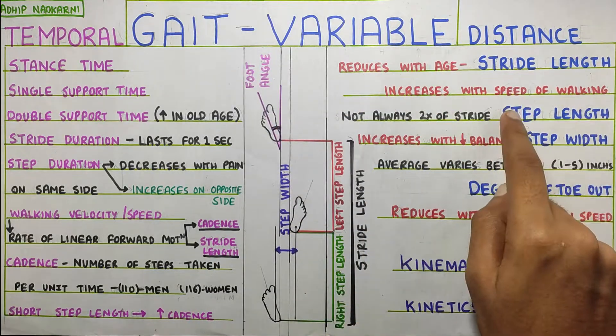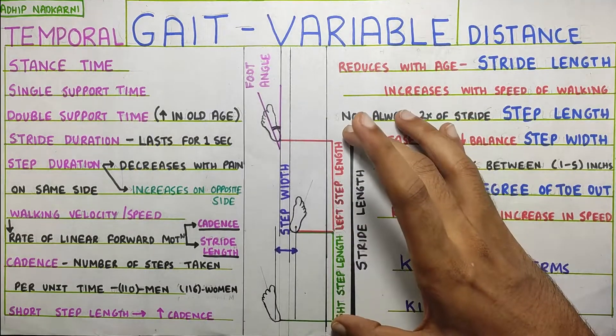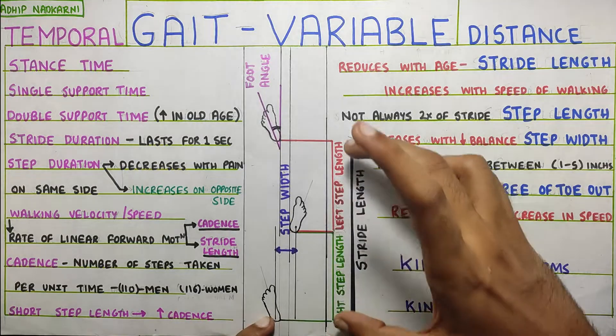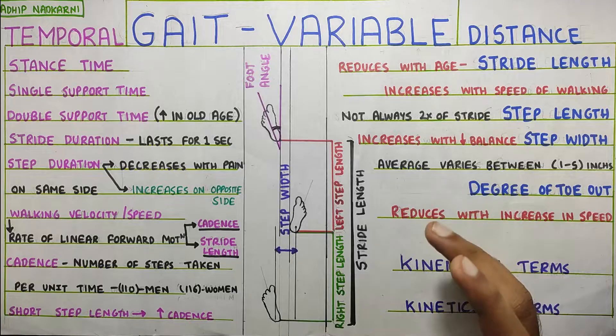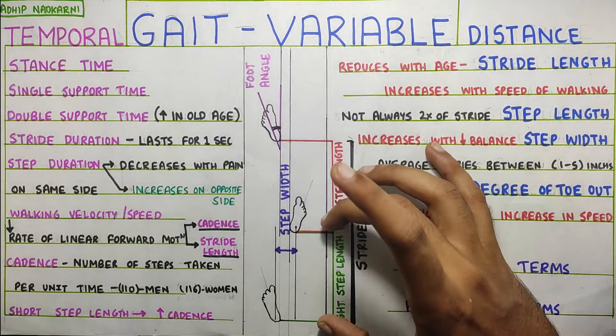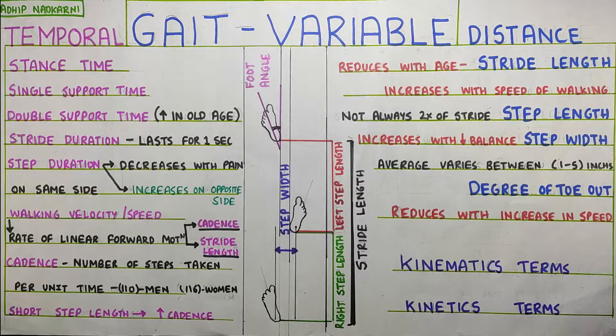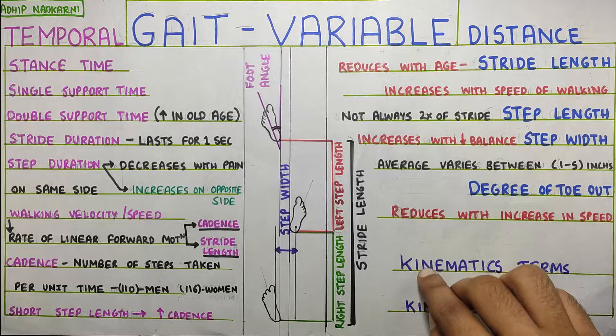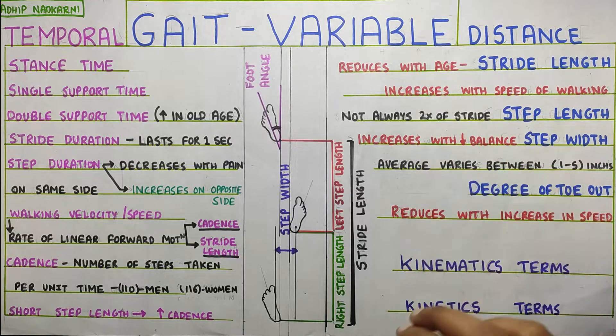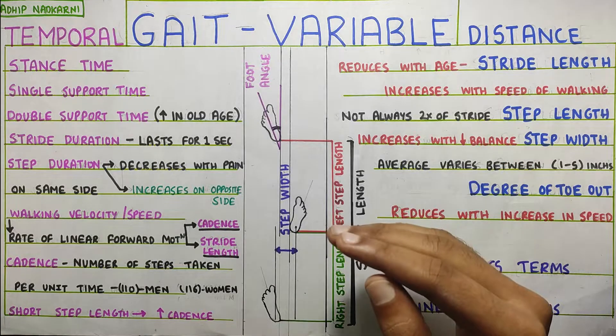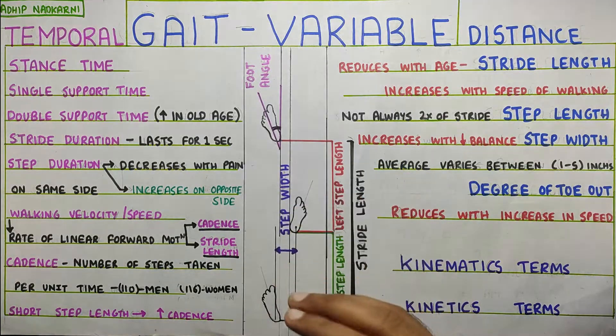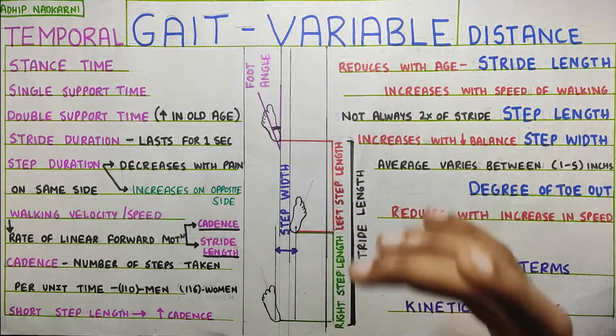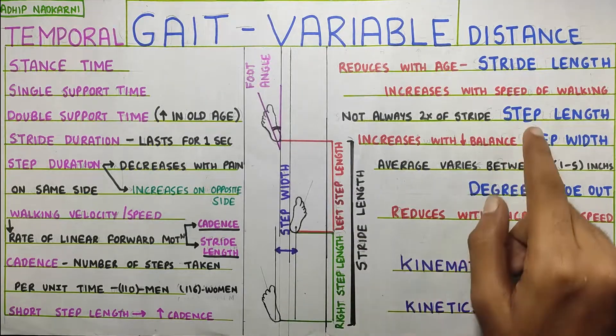Next one is the step length. Step length is basically the half of the stride length. Because it's from one heel strike that is the left foot to the heel strike of the right foot. So, it is half of the stride length but it is not always the case. It does not mean that every time your step length will be half of the stride length. Now, why is this? Can you guys tell me? Now, this happens because if you have pain on one side, what will happen is you take one small step on the one side and then a bigger step on the other side. So, this will create an imbalance in your step length. That is one step will be smaller compared to the other step. Hence, it is not always that the right step and left step are equal and because of this stride length is not always double of your step length.